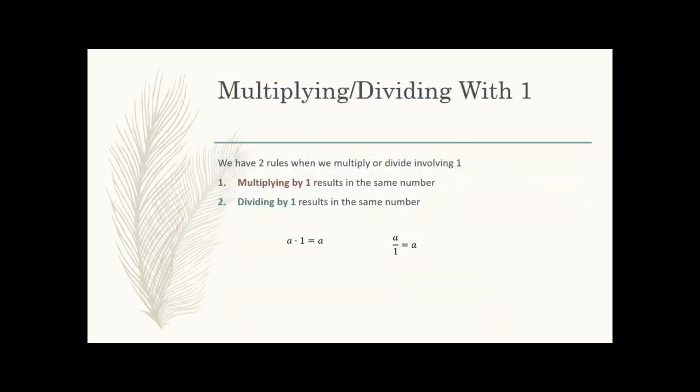Now let's look at special rules with one. We basically have two rules. If you're multiplying by one, you get the same answer — the same thing you started with. Any number times one results in itself. It's the same with dividing: dividing by one doesn't change anything. You end up with the same thing you started with. One likes to keep things the same, and we use this property a lot when working with equations.